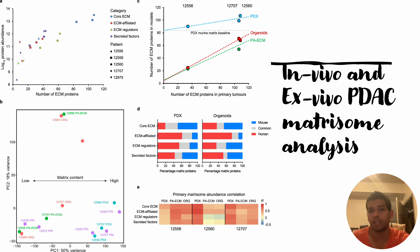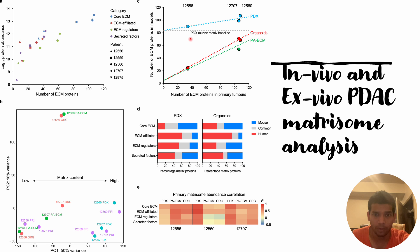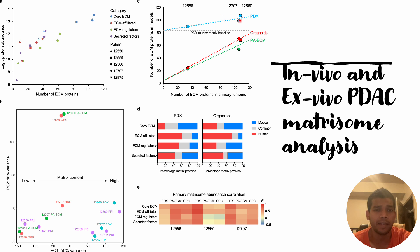After validating that they can cluster patients based on protein abundance, they then checked whether there is a correlation between the ECM proteins present in their models and the ECM proteins present in the primary tumors. When they performed a linear regression, they found that for the organoid and PA-ECM models they can predict the number of ECM proteins in the primary tumors based on the ECM proteins found in their ex vivo models. However, the linear regression is not as good for the PDX model because most of the murine matrix present in the PDX model interferes with the results and does not directly show the relationship in the linear regression model.